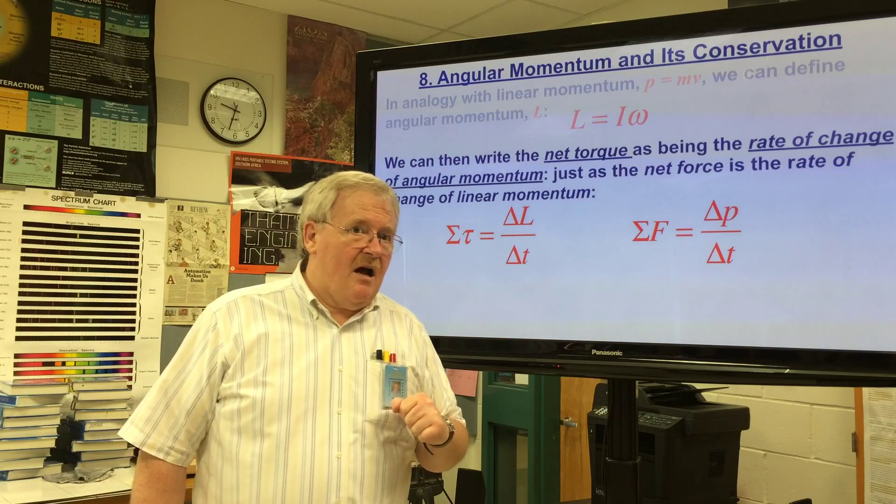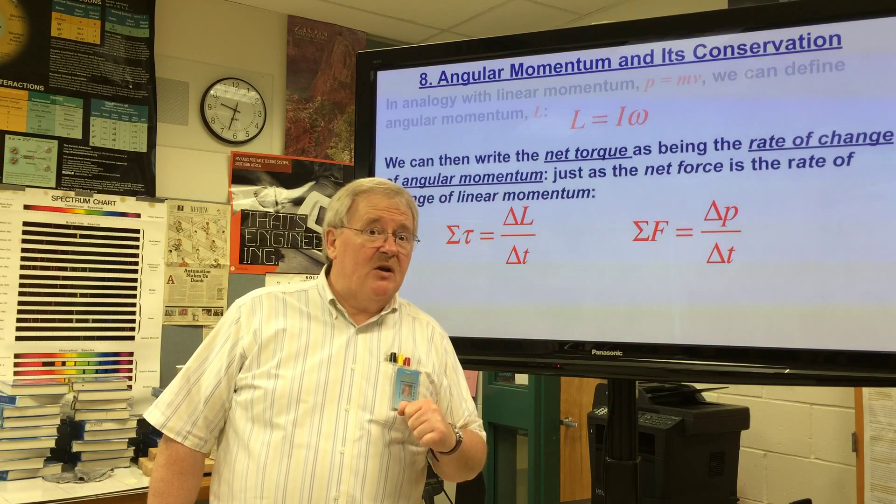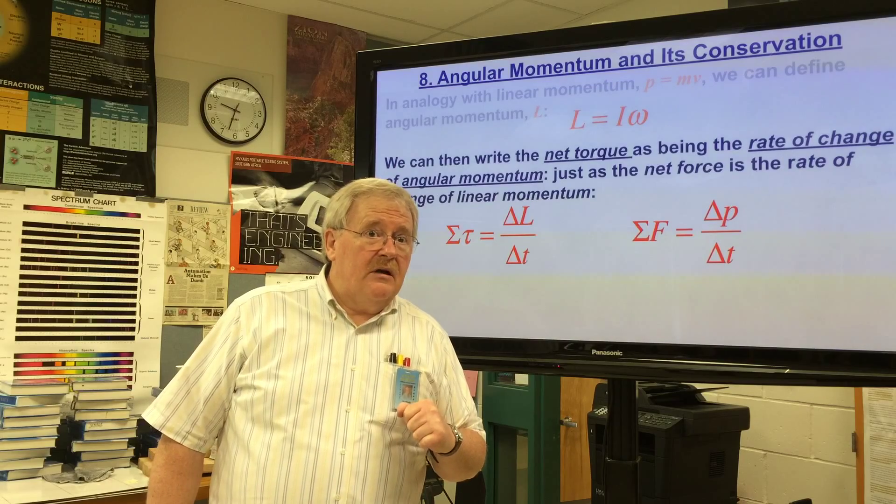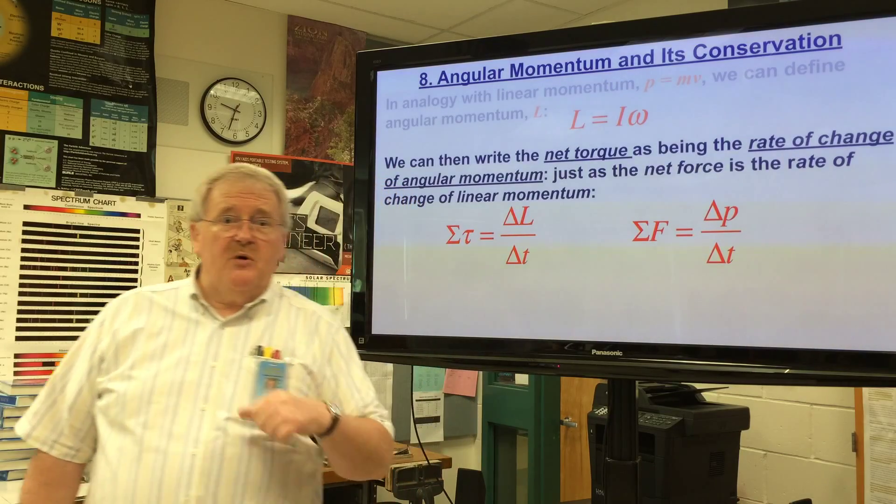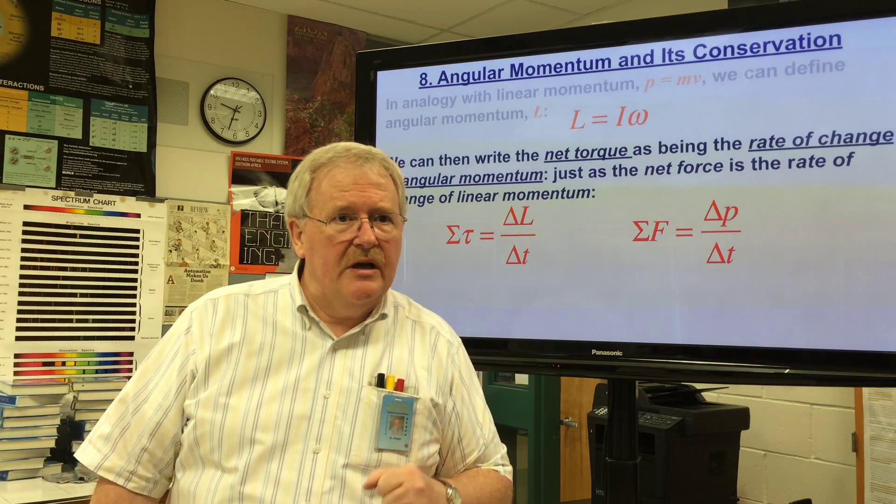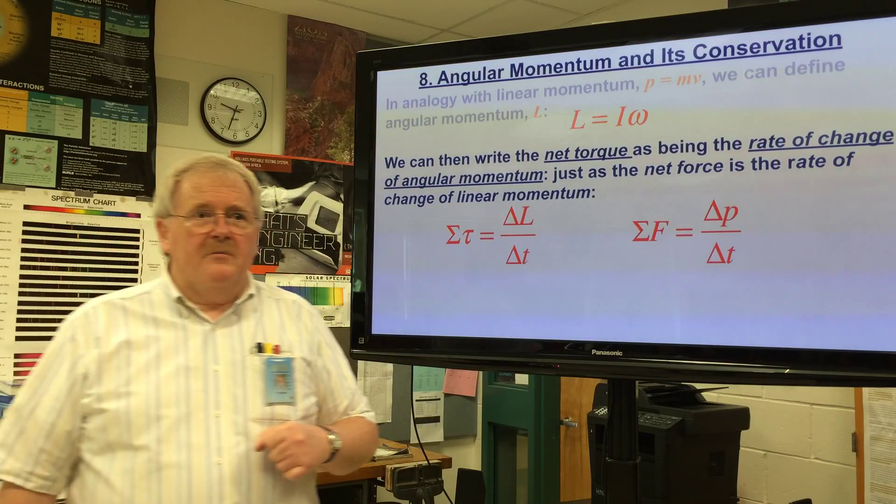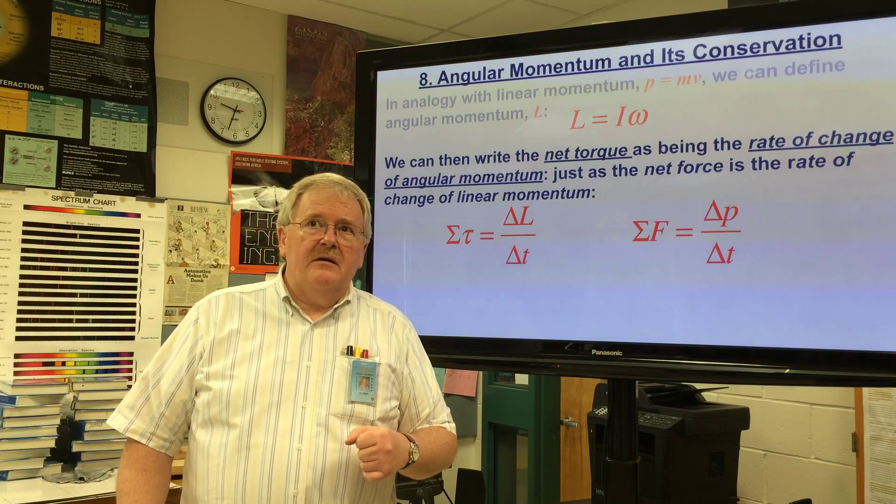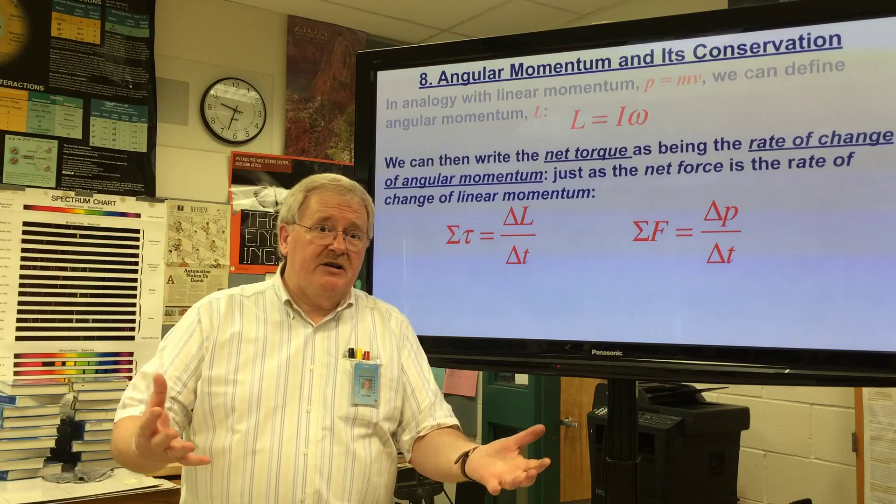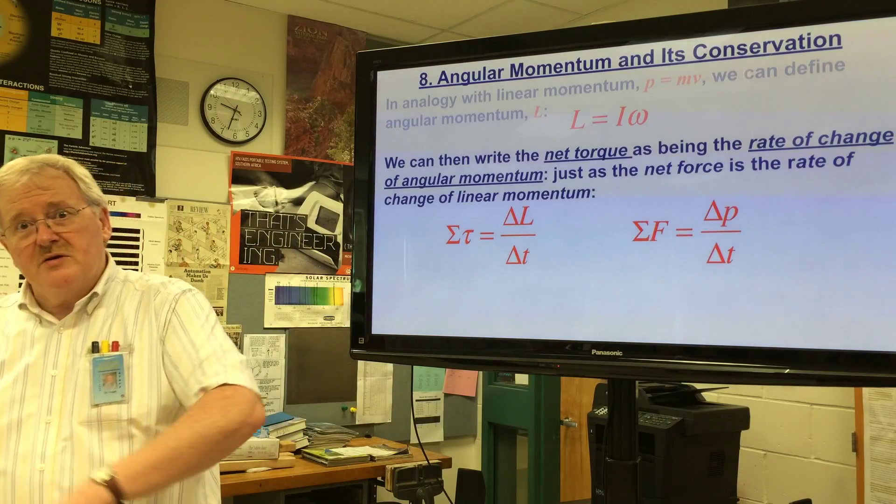Question: Say you have a collision between stationary object and an object that's spinning and moving linearly, would angular momentum be transferred to the stationary object or not? It depends on how the collision occurred. There could be some spinning occurring, but it would depend exactly on how the force or how the collision occurred as to whether or not there would be any change.